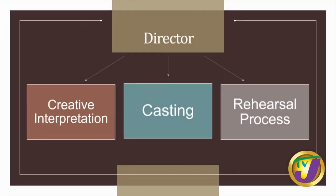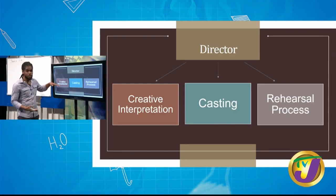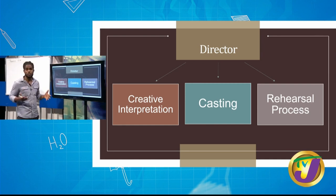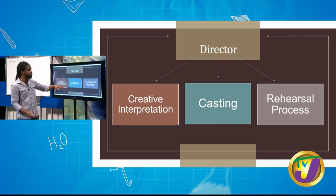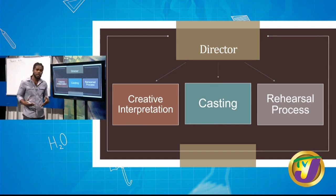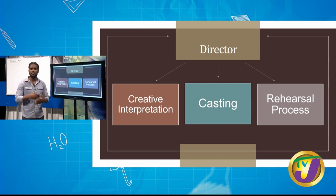The director's first task is to read the script and do what we call a creative interpretation — understanding the script and determining how to execute it. Then we have casting: you have the script, you have characters, and you need people to play them. The director and stage manager host auditions where people try out and read for roles. The director, with his or her vision, chooses the people best suited for each character.